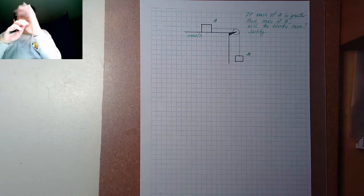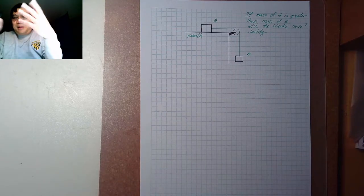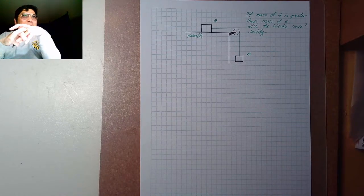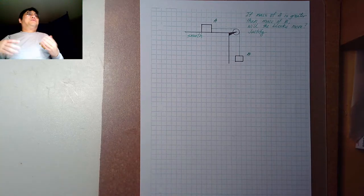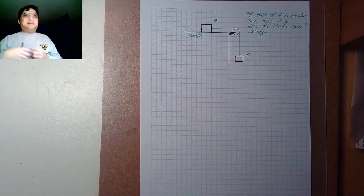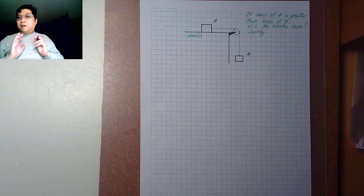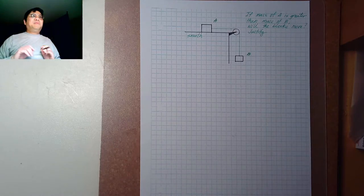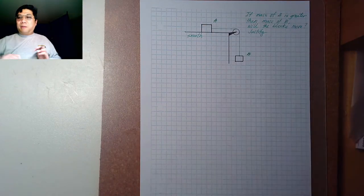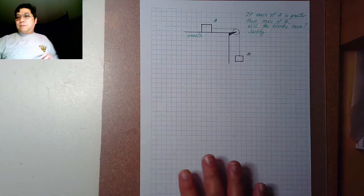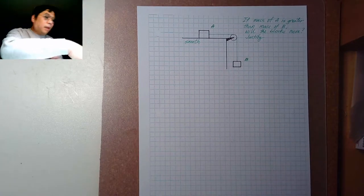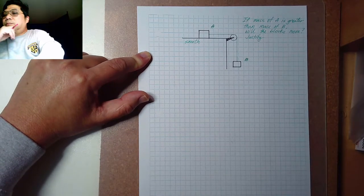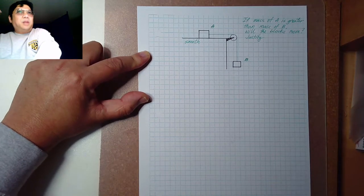Welcome back. Right now we will be working on a very interesting question about the pulley and block system. This question is one where most people who try to answer it would make the same mistake of saying 'it will not move because block A is greater than block B.' So let's read the problem correctly: if the mass of A is greater than mass of B, will the blocks move? Let's justify it.